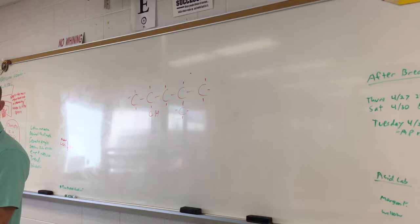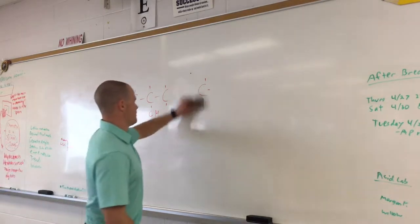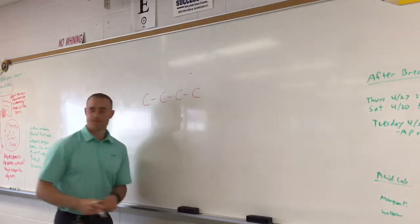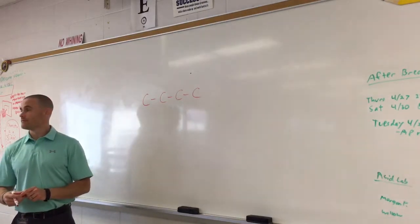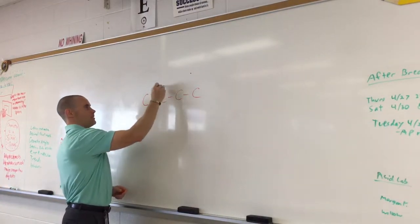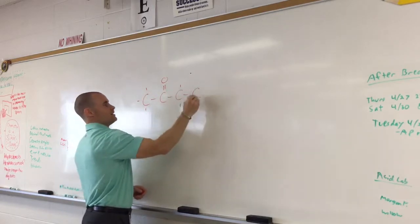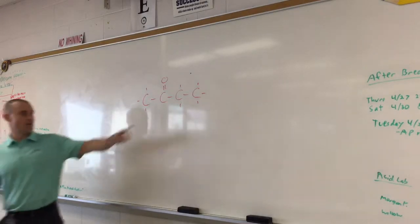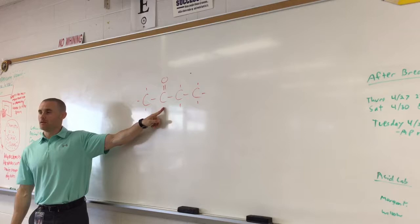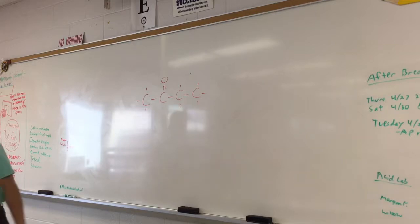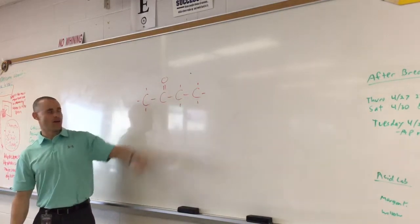Number two: 2-butanone. How many carbons? Four — one, two, three, four. Good. The ketone goes on the second carbon — either one is fine, doesn't matter. There it is, 2-butanone. Good job. Is that all you have? Good. Two butanone — who put a bond there? Why shouldn't you have that extra bond? Because it's already got four bonds. One, two, three, four. Just be careful.